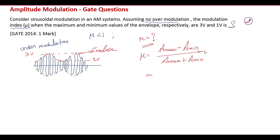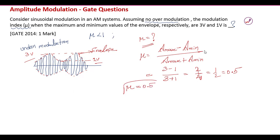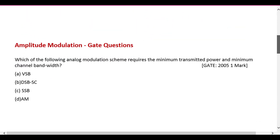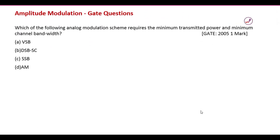Substituting the values: A_max = 3V and A_min = 1V, we get μ = (3 − 1) / (3 + 1) = 2/4 = 0.5. So the modulation index value is 0.5.